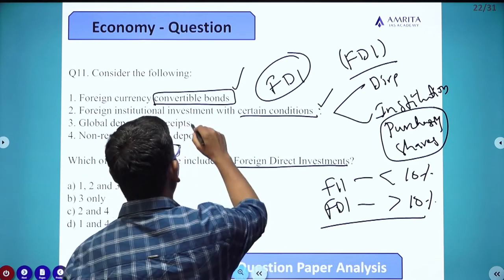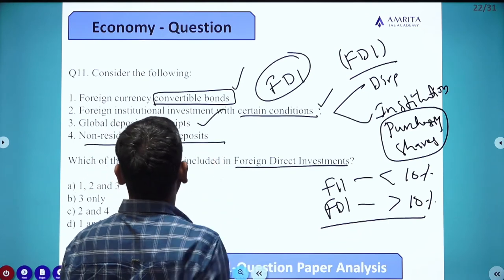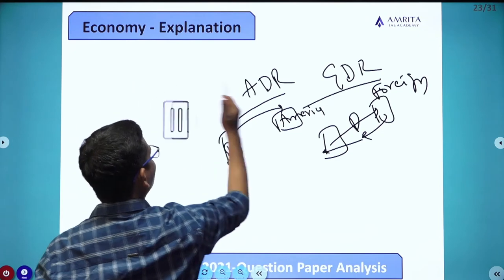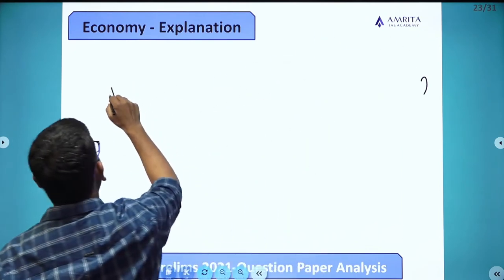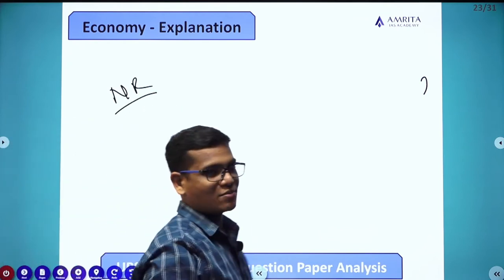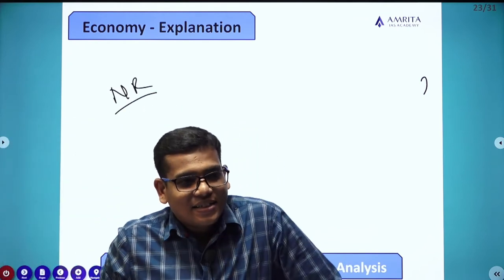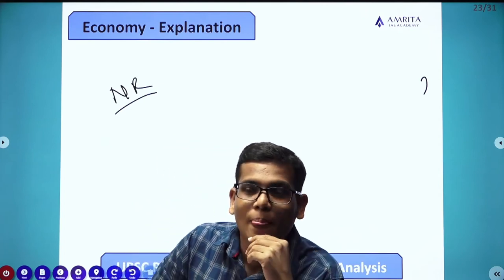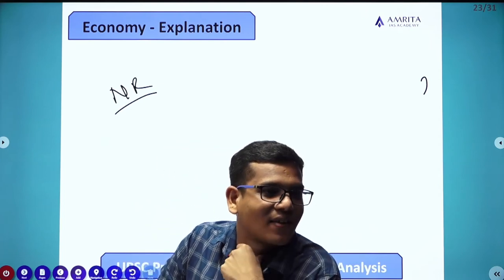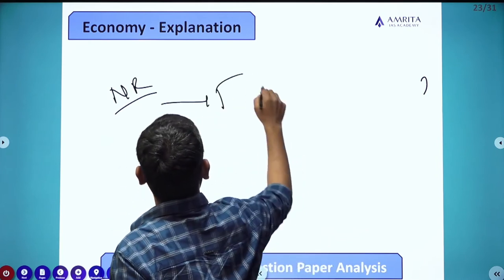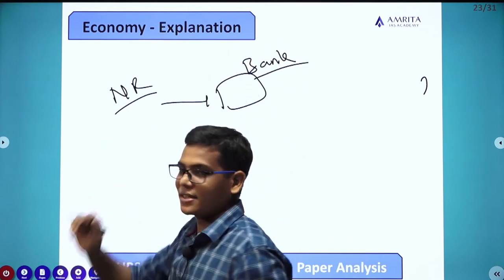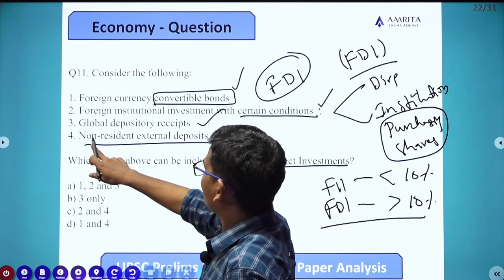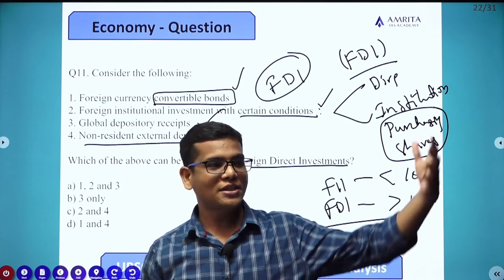So Global Depository Receipts are also FDI. Next, Non-Resident External Deposits: Non-Resident Indians are Indians who are not residing in India. They work in a foreign country, earn money, convert it into forex, and save it in an Indian bank.